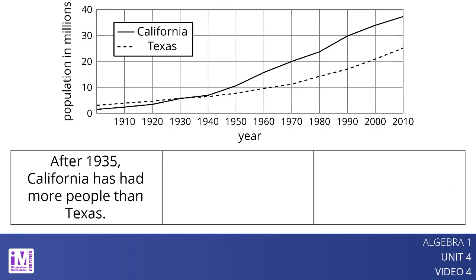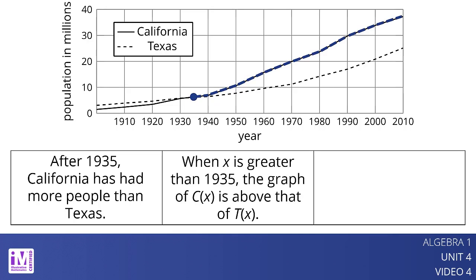After 1935, California has had more people than Texas. We can tell when x is greater than 1935 because the graph of c of x is above that of t of x. We can convey this with function notation by writing c of x is greater than t of x for x greater than 1935.